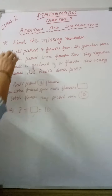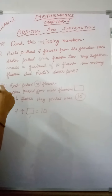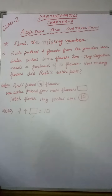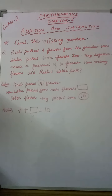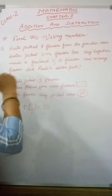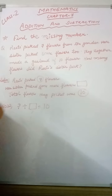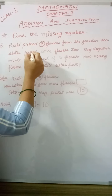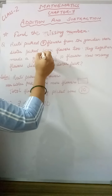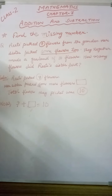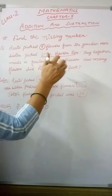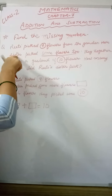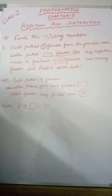Students, my next topic of this chapter is find the missing number. In the previous one I explained the missing sign, but here this is a missing number. Let's take one example: Rita picked 7 flowers from the garden. Her sister picked some more flowers too. Rita's number of flowers is given in the question, but how many flowers her sister picked is not given — it's written 'some flowers.' They together made a total of 10 flowers. So Rita's number and total are given; her sister's number of flowers is missing.